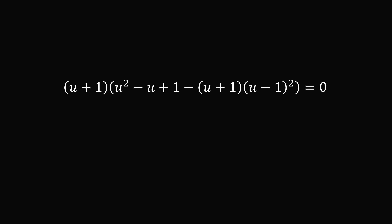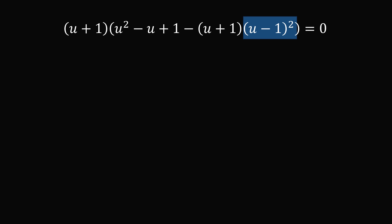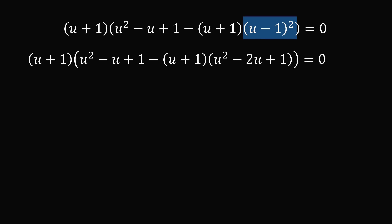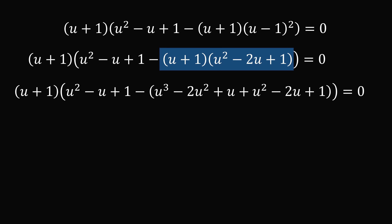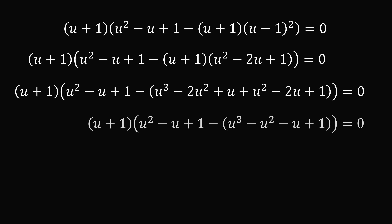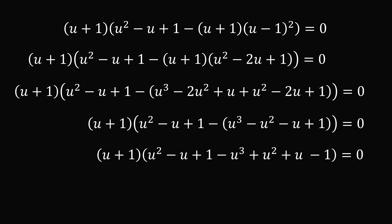We expand and simplify. We have (u plus 1)(u squared minus u plus 1) minus (u plus 1) times the square of (u minus 1). Expanding (u minus 1) squared gives u squared minus 2u plus 1. After distributing and combining like terms — negative 2u squared plus u squared simplifies to minus u squared, and plus u minus 2u gives minus u — we get 2u squared minus u cubed after changing signs and canceling terms.